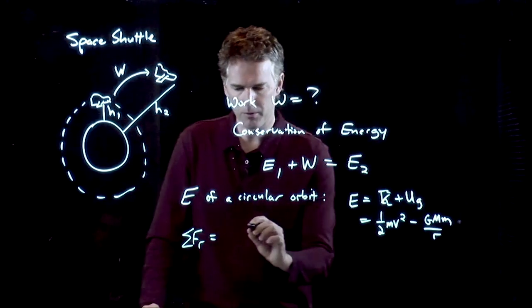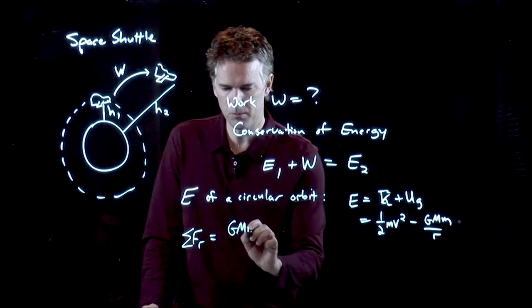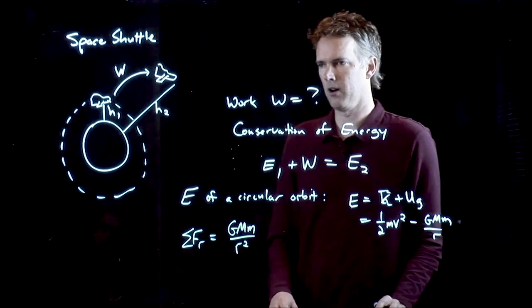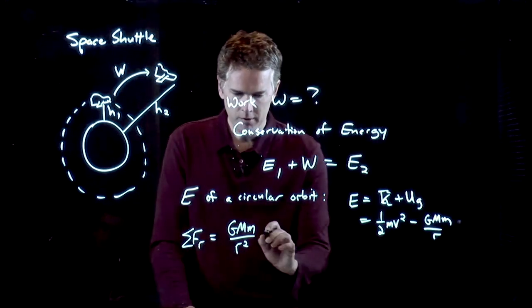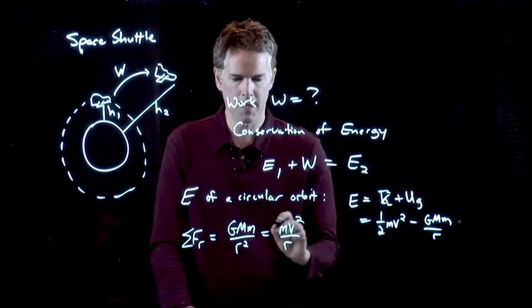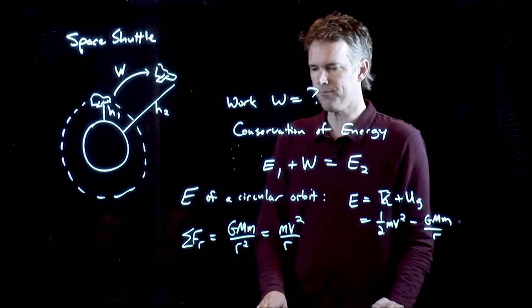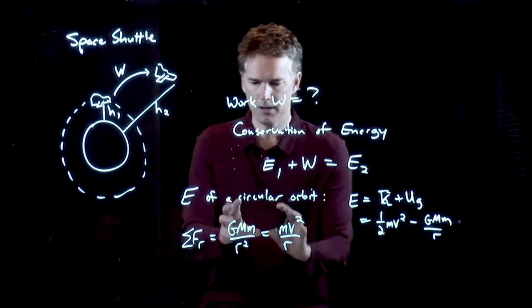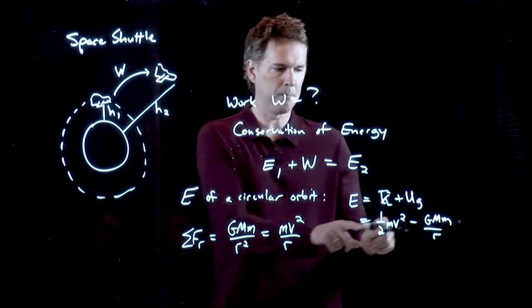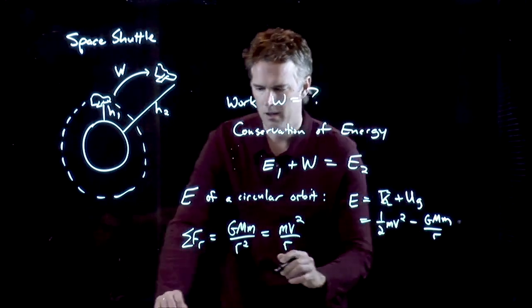There's only one force in the radial direction which keeps this thing moving in a circle. It's Newton's universal law of gravitation. If things are moving in a circle, we know that the forces have to add up to mv² over r. And now I can take this equation, solve it for 1/2 mv², and plug it in over here.